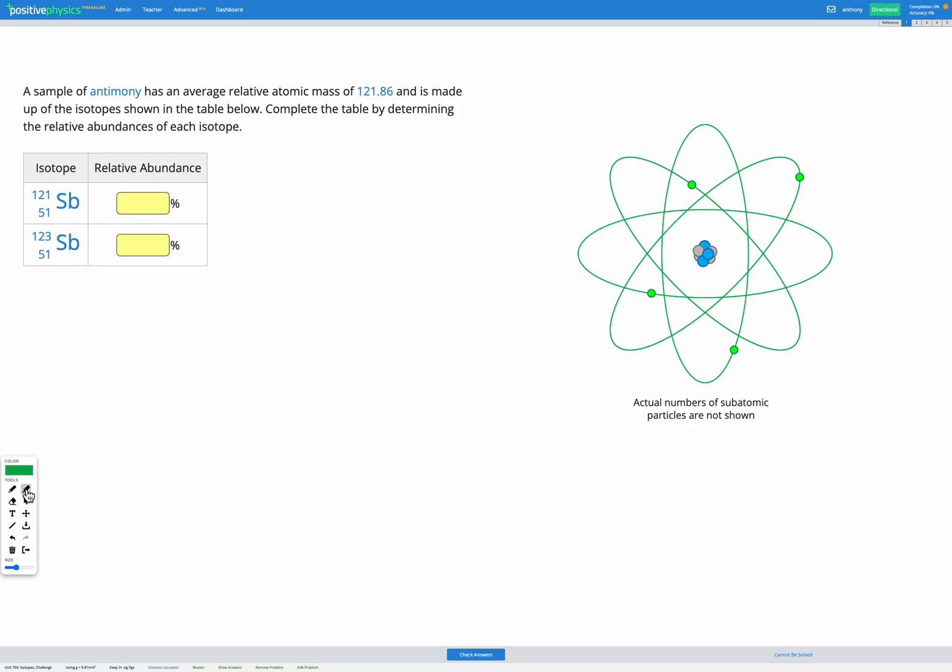In this question, we have a sample of antimony, and we're told it has an average relative atomic mass of 121.86. We're then provided with the isotopes that make up this sample, but we're not told the relative abundance, and we're going to have to figure that out.